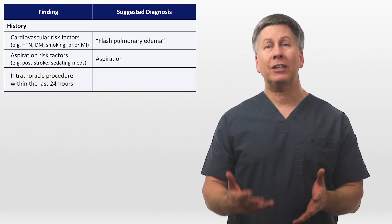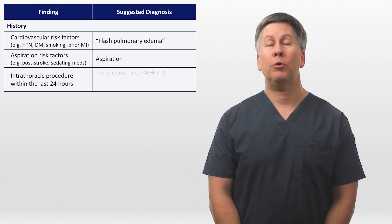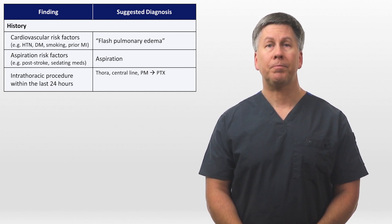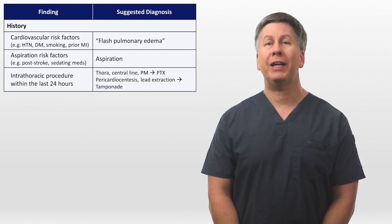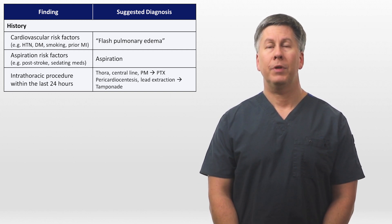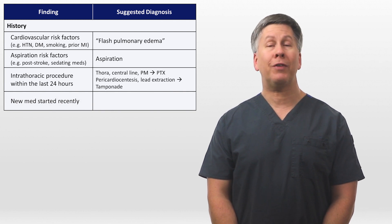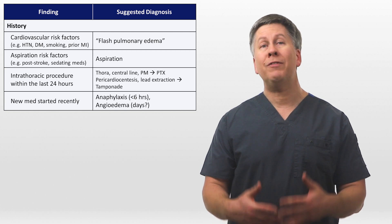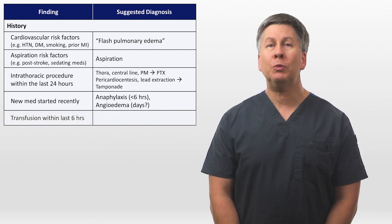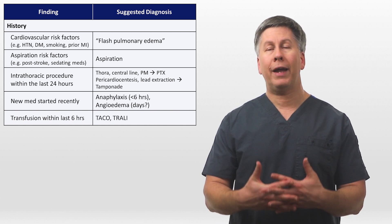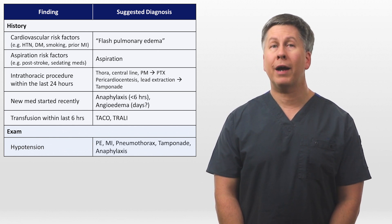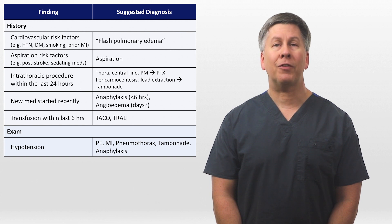Have they had any intrathoracic procedures in the last 24 hours? For example, a thoracentesis, central line, or pacemaker insertion all suggest the possibility of a pneumothorax, while pericardiocentesis or pacemaker lead extraction can cause tamponade. A recently started medication suggests the possibility of anaphylaxis or angioedema — anaphylaxis typically occurs within 6 hours of exposure, while angioedema can take days or longer to develop. A transfusion within the last 6 hours suggests TACO or TRALI. Key exam findings include hypotension, which suggests PE, MI, pneumothorax if large, tamponade, and anaphylaxis.